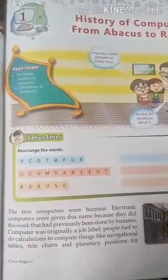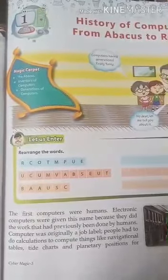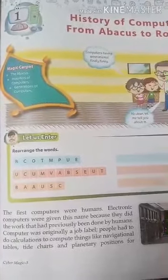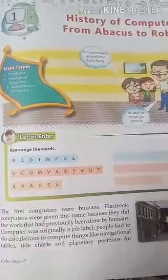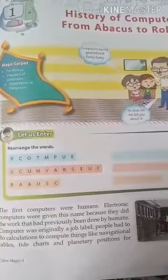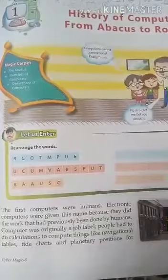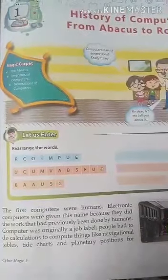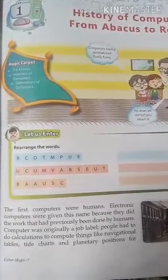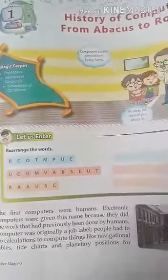The first computers were humans. Electronic computers were given this name because they did the work that had previously been done by humans. Computer was originally a job title. People had to do calculations — to compute things like navigational tables, tide charts, and planetary positions for astronomical tasks.